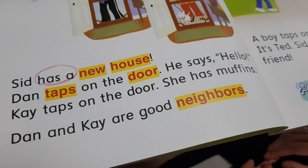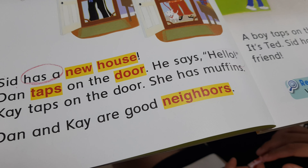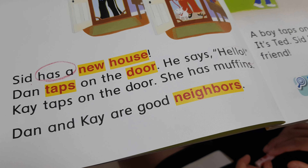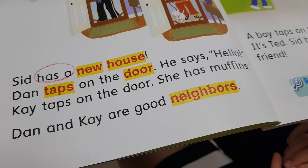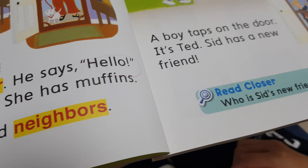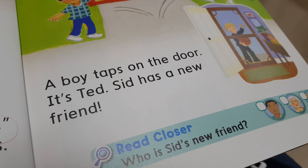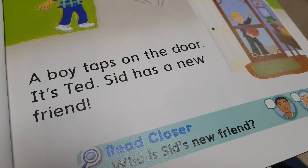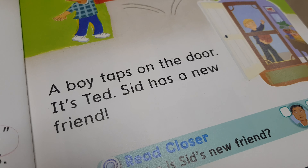Dan and Kay are good neighbors. A boy taps on the door. It's Ted.